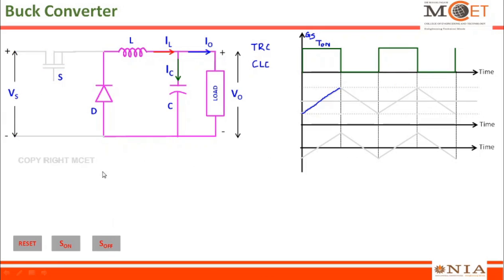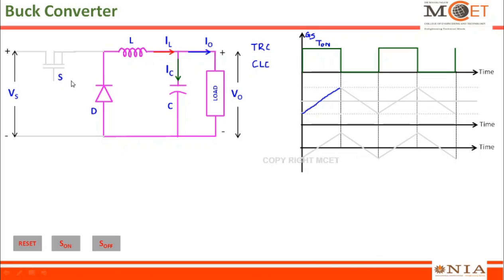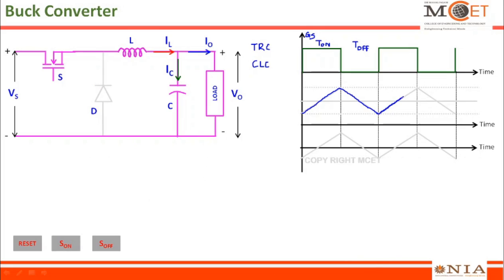Once the switch is turned OFF, the circuit changes. This end of the inductor becomes more positive, because of which the diode becomes forward biased and the current through the inductor will be circulating. At this point, the inductor is completely disconnected from the source and is now in discharging mode. When the switch S is in OFF condition, the inductor is in discharging mode, and the current will slowly come down to a minimum value. Again, once it reaches the minimum value, I will turn ON the switch and the inductor current will ramp up to a maximum value.